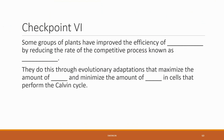Checkpoint six: some groups of plants have improved the efficiency of blank by reducing the rate of the competitive process known as blank. They do this through evolutionary adaptations that maximize the amount of blank and minimize the amount of blank in cells that perform the Calvin cycle. And that is the end of chapter eight: photosynthesis. Thank you all for being here, and we'll see you during the next lecture.